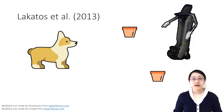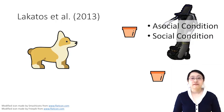In the previous study, Lakatos et al. studied whether dogs would follow the pointing gesture given by a robot. The dog should choose the bucket being pointed at to get the treat. They included two conditions: the asocial condition and the social condition.